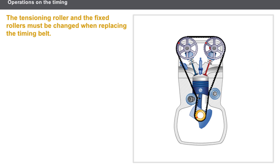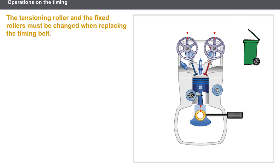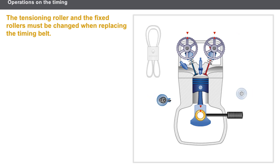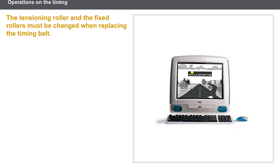Now let's look at how to replace a timing belt. A timing belt is removed by aligning the marks by turning the crankshaft, then locking the engine with a pin. Any removed belt must be replaced. The tensioning roller and the fixed rollers must also be replaced. Once the belt is refitted, it must be tensioned using the manual tensioning roller or by positioning the automatic tensioning roller. You should always refer to the technical documentation to find out about the special refitting procedures for each engine type.